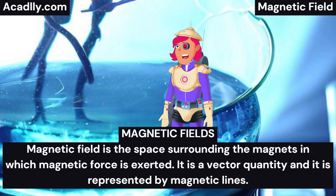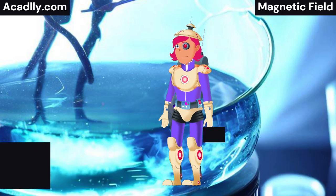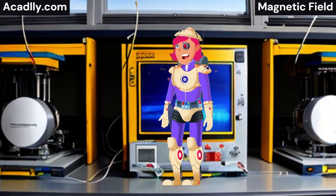Magnetic field is the space surrounding the magnets in which magnetic force is exerted. It is a vector quantity and it is represented by magnetic lines. The direction of the magnetic flux at any point is the direction of the force on a north pole placed at that point. In the neighborhood of two magnets placed close together, there exists a field in which the direction of the magnetic flux changes rapidly in a confined space. The magnetic flux can be obtained by using iron filings.